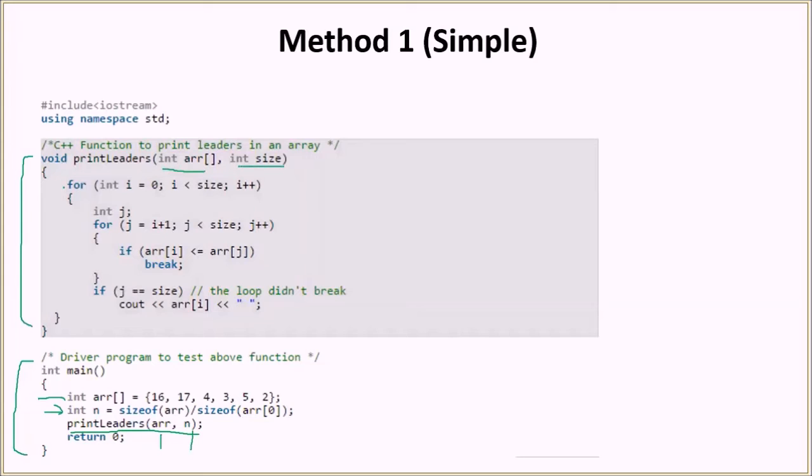So in this loop, we are just looping from 0 to size minus 1. And then we have this inner loop here that actually runs from i plus 1 to size minus 1. And it sees that if there is any element which is greater than the current element, if there is, then it breaks. Otherwise, it doesn't break.